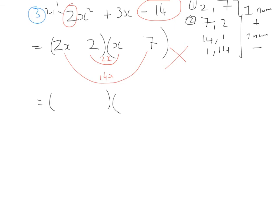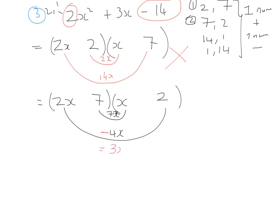We try option two: 7 first, 2 second. Again 2x and x. Smiley face: 7 times x = 7x and 2x times 2 = 4x. Making one positive and one negative: 7x minus 4x = +3x, which matches our middle term. So the 7 must be positive and the 2 must be negative, completing our factorized quadratic as the answer.